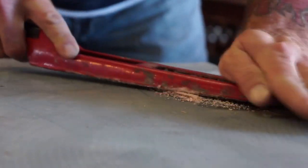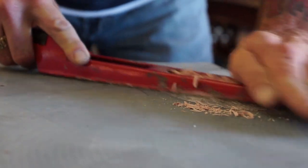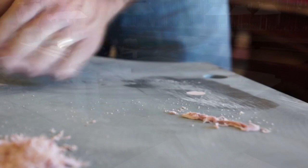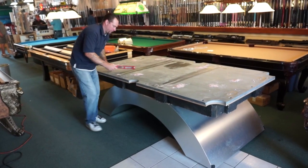Some pool table movers use wax to seal the slate together and patch the holes. We do not, because we are a Southern California business and wax is temperature sensitive, which can raise up over time in a hot environment.